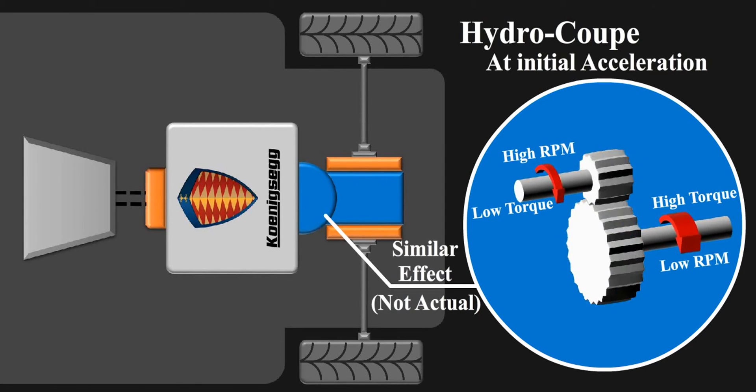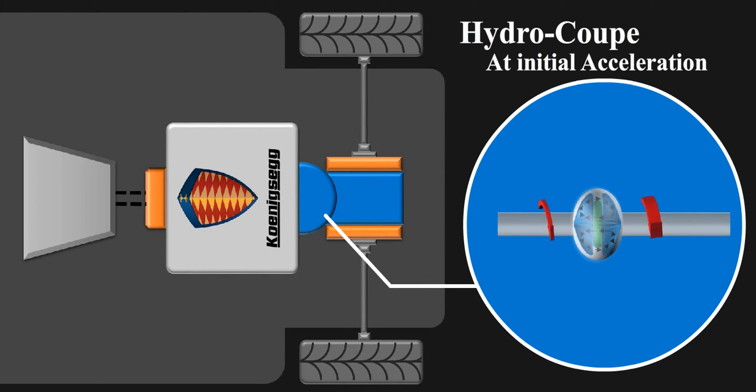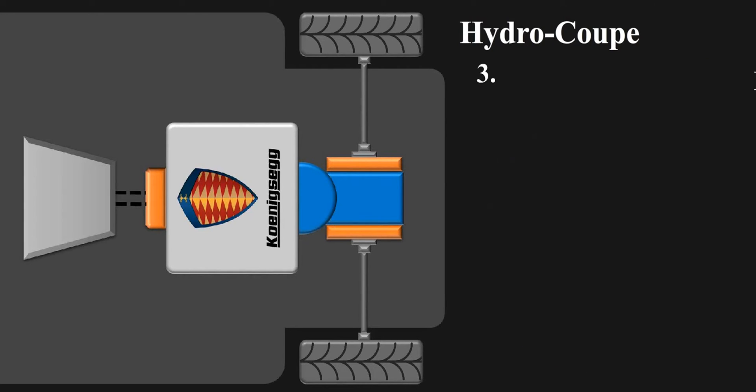At initial acceleration, when lot of torque is required, it's good thing to have but it's not very efficient way of transmitting power as there are lot of losses in between. So momentarily, transmitting power via it for more torque is okay but always doing so is not great. To overcome this efficiency problem comes the third stage of working, that is lockup function.